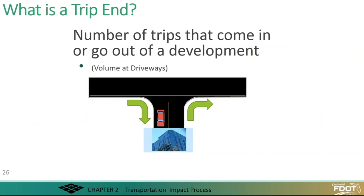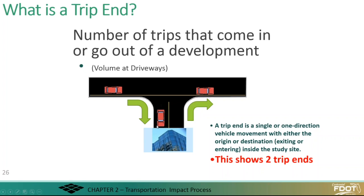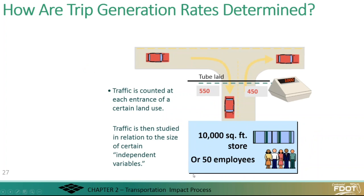So what is a trip? This is different from a traffic engineer going to the field and counting vehicles at an intersection. We do look at cars, but we call it a trip end. We count the number of trips going in and out of a driveway — a car going into a driveway is one trip end, and a car leaving that establishment is another trip end. That shows two trip ends.